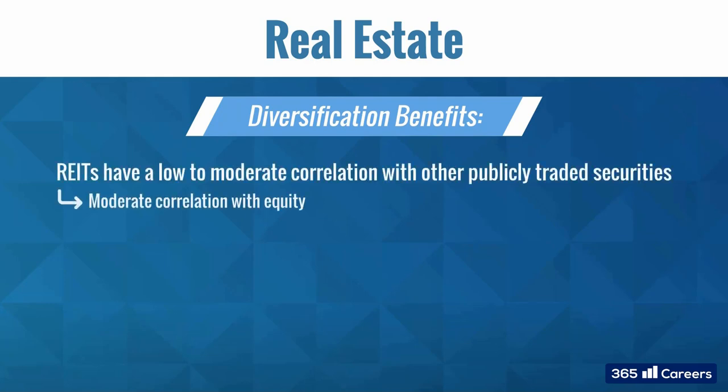REITs tend to have a moderate correlation with equities, which has been around 0.6 historically. Their correlation with bond returns has been very low. These low correlations with stocks and bonds suggest that investors can achieve diversification benefits by including real estate in their portfolios. Still, they need to pay attention to the methods of index construction and consider whether appraisal or repeat sales data is used.